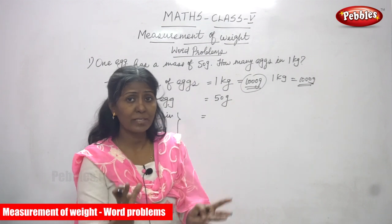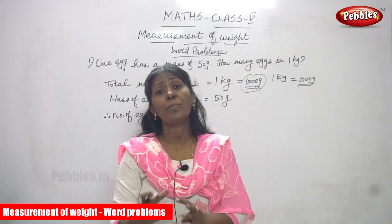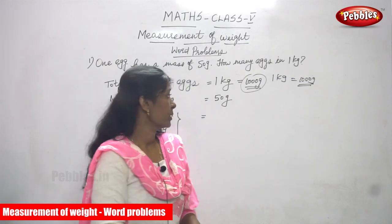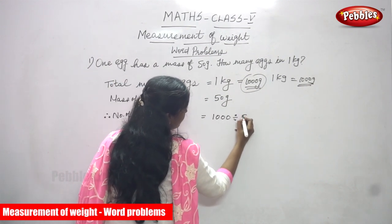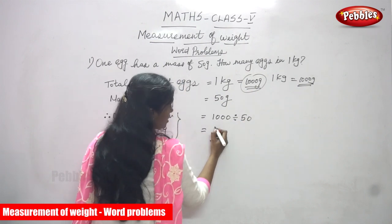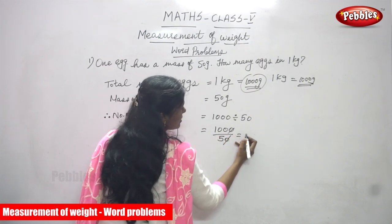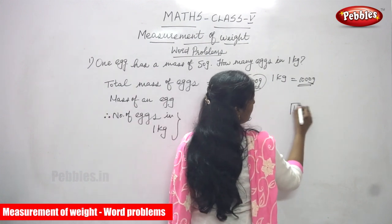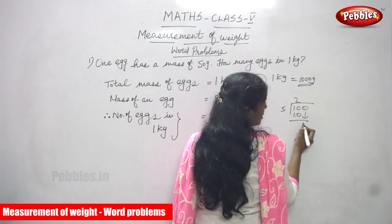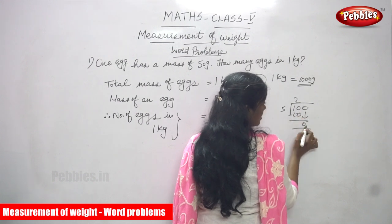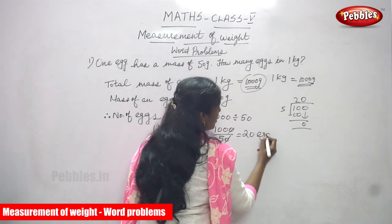The total weight of eggs is equal to 1000 grams, and each egg's weight is equal to 50 grams. They asked how many eggs in 1 kilogram, so you have to divide: 1000 divided by 50. Cancel the zeros — 100 divided by 5. 5 goes into 10 twice, remainder 0, then 5 into 10 is 2. The answer is 20 eggs.